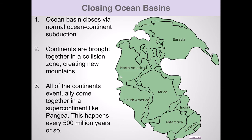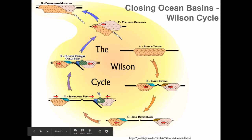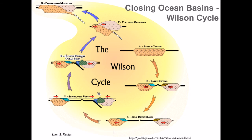This is all part of a cycle of opening and closing ocean basins known as the Wilson Cycle. Geologists have noticed that the breaking up of continents creates a small divergent spreading zone — a rift zone — which in turn creates a much larger oceanic basin, and that oceanic basin eventually closes back up. This whole cycle is known as the Wilson Cycle.